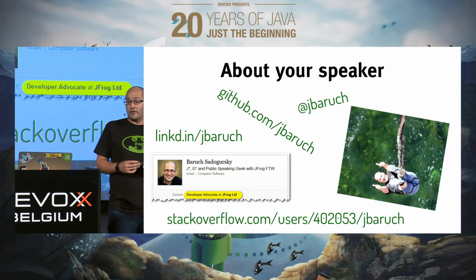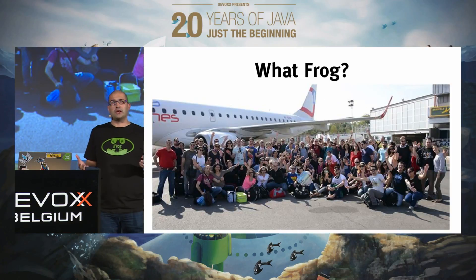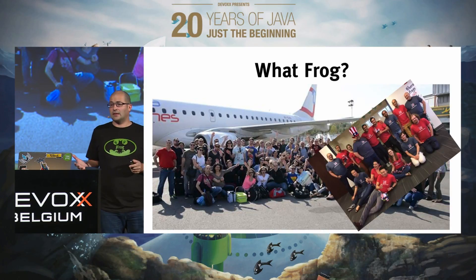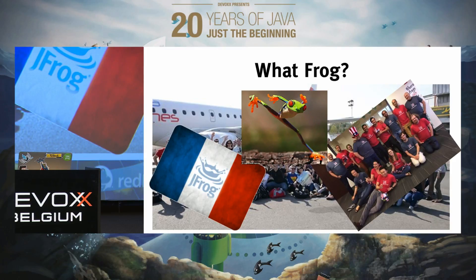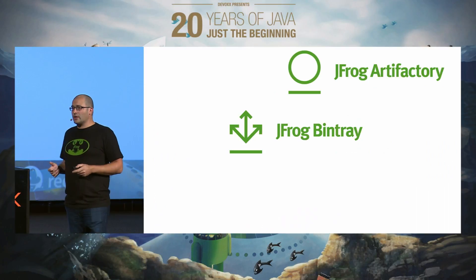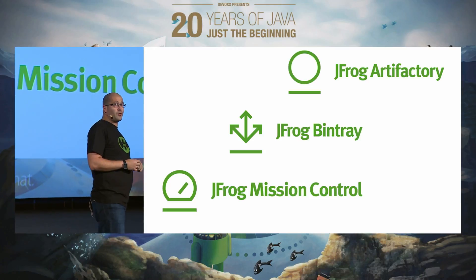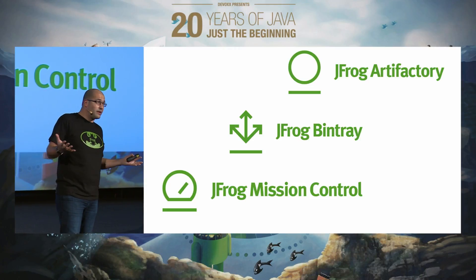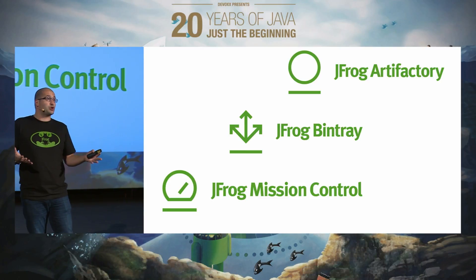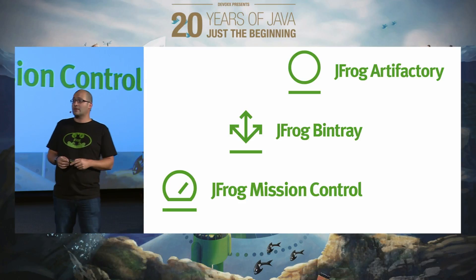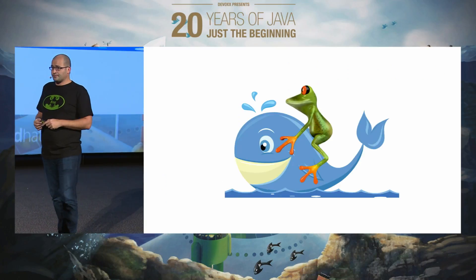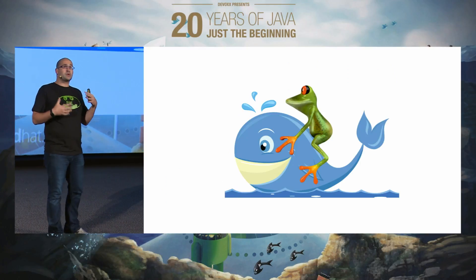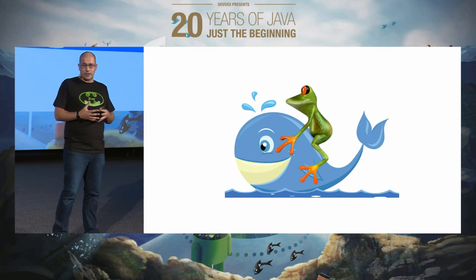My name is Baruch, I'm a developer advocate with JFrog. JFrog is a startup company with offices in Israel, Santa Clara, and France. We're obsessed with frogs. We have cool t-shirts at our booth tomorrow. We have three products: Artifactory, Bintray, and the latest edition, Mission Control. Both Artifactory and Bintray are about managing binaries, including Docker images. Bintray is a distribution platform which also has the ability to distribute your binaries and Docker images.